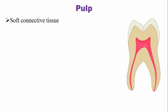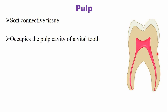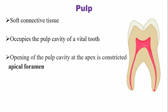Pulp is a soft connective tissue present within the center of the tooth, surrounded by dentine. The pulp cavity opens at the apex, and these openings are known as the apical foramen. From here, the blood vessels and nerve vessels enter and leave the tooth.